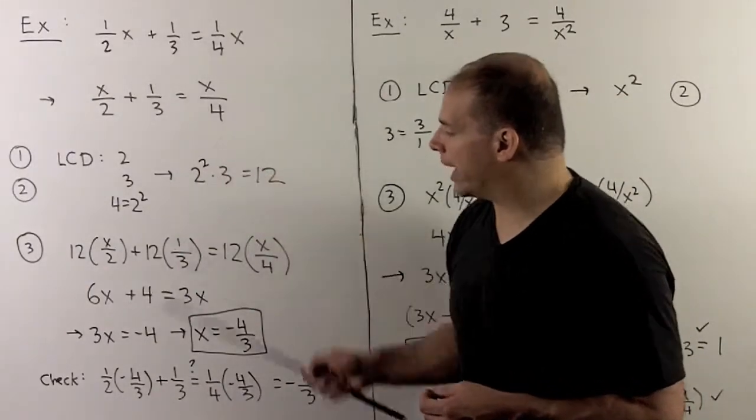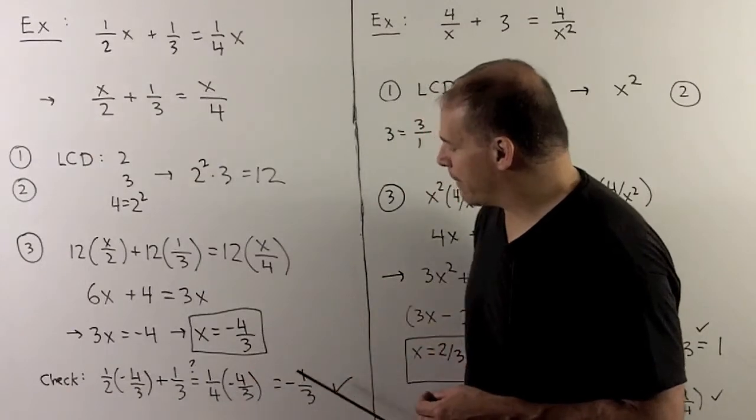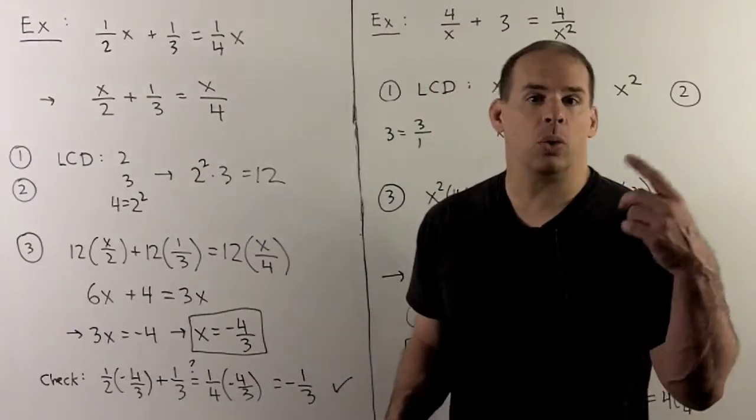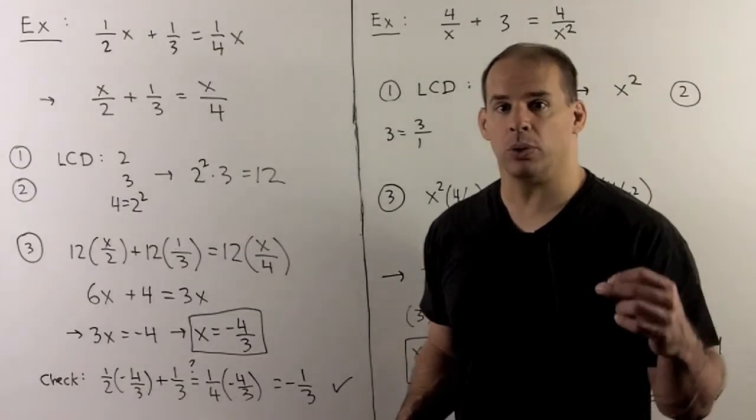If we substitute into the original equation, we work out each side and see we get minus 1 third. The equation is true when we use x equal to minus 4 thirds, so that's our only solution.